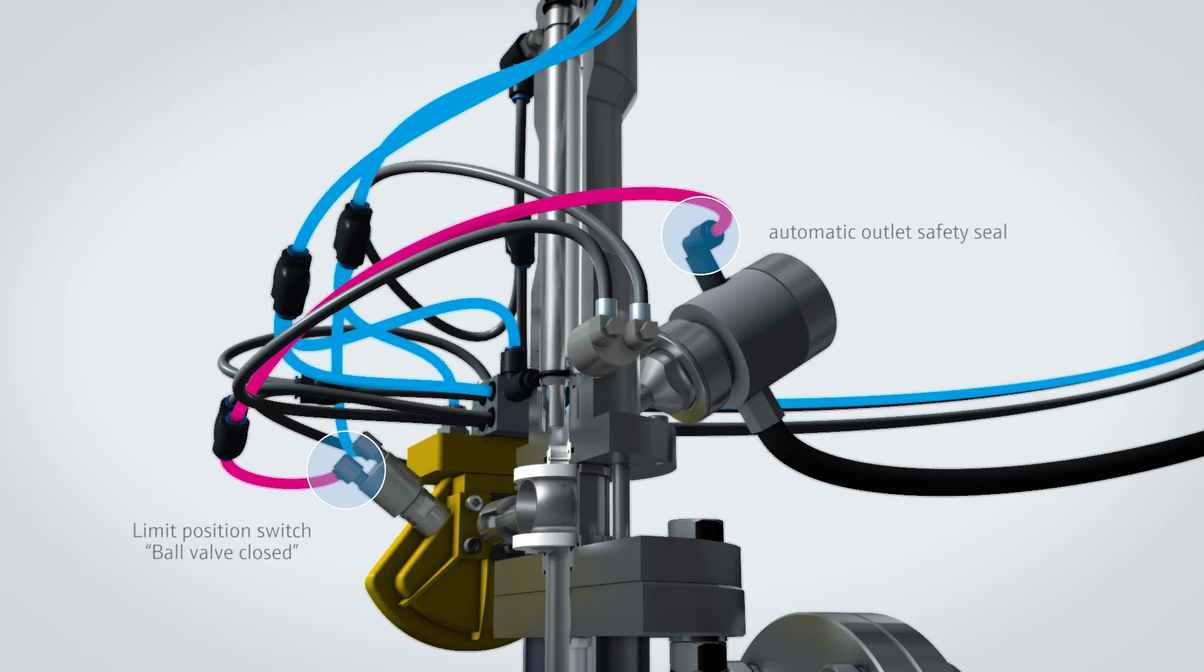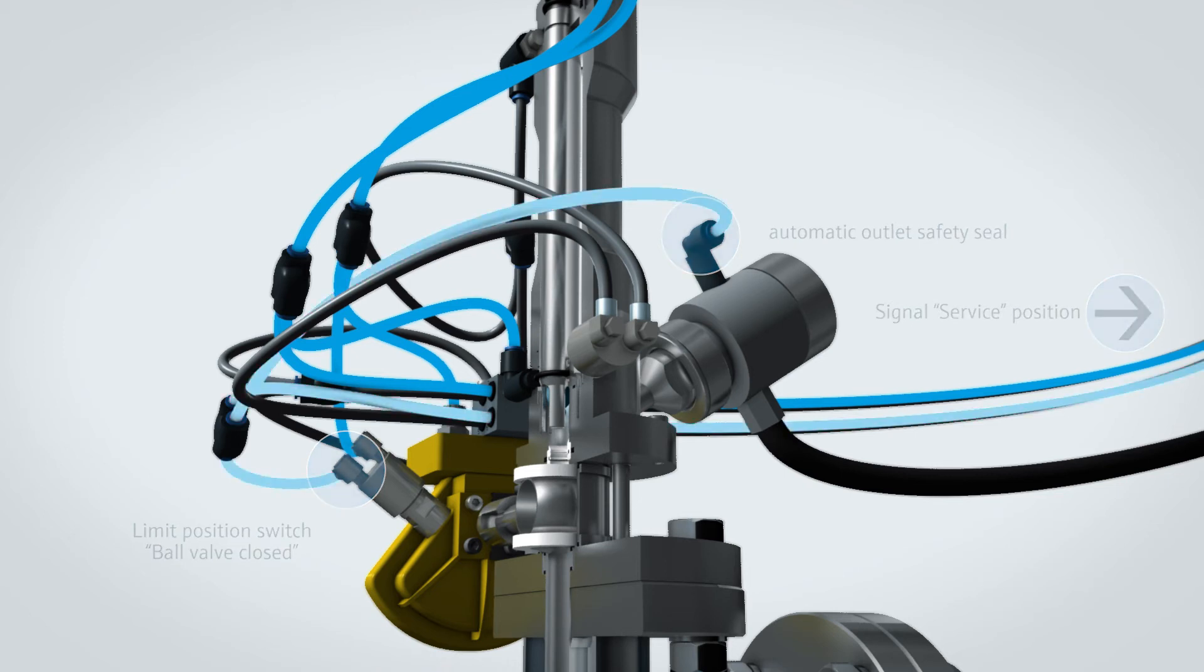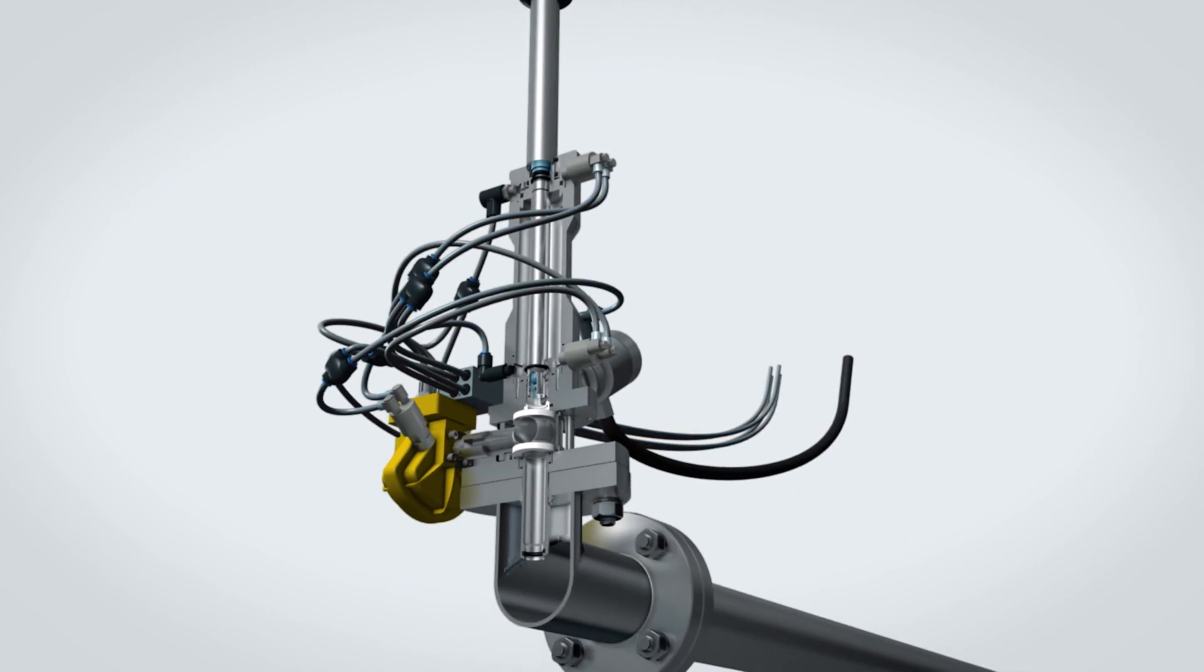In addition, a pneumatic or electrical signal can be output to indicate that the sensor is now in the service position. You can now remove the sensor or release the top part of the assembly from the ball valve in order to replace seals or perform other maintenance tasks.